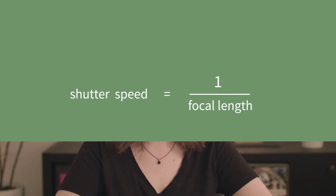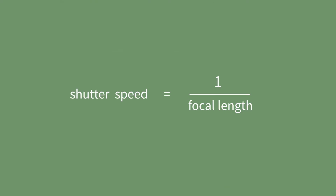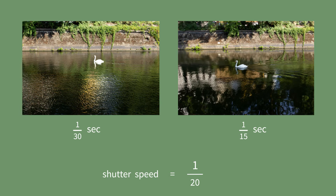There's a rule of thumb that says the shutter speed should be about 1 over the focal length that you're using. Meaning, if you're using a 20mm focal length, your image might still be crispy and sharp at 1 over 30, while it's already shaky at 1 over 15 seconds.